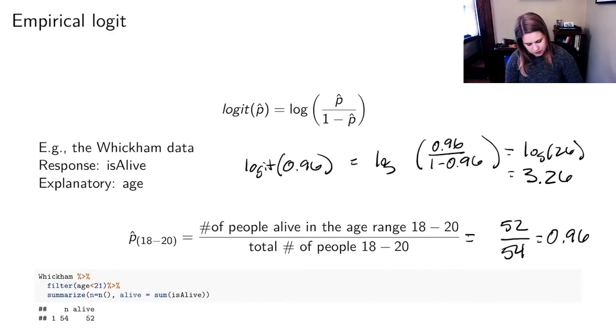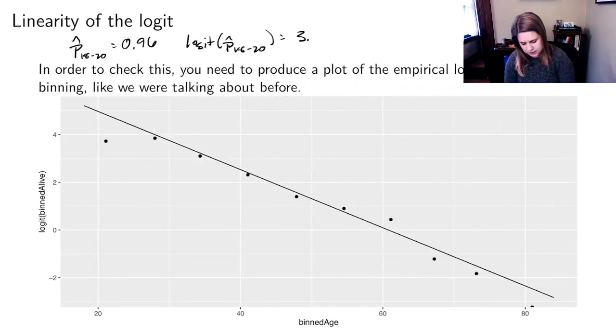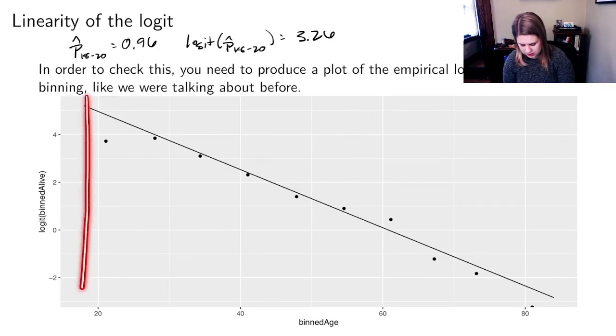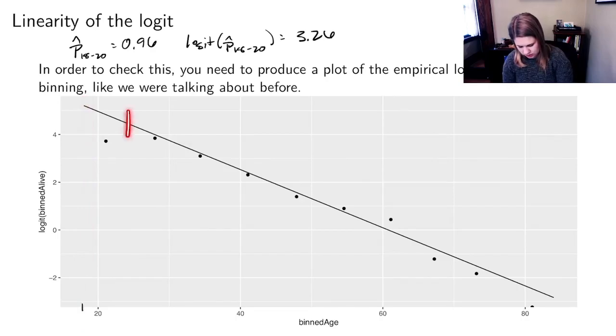And then we found the logit of p-hat 18 to 20, and I think that was 3... let's go back and look... 3.26. So to make this plot, I got R to divide the data into 10 equally sized bins. And because they're equally sized, they ended up being a little bit strange on the edges.